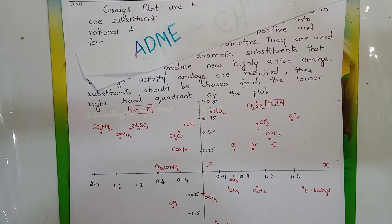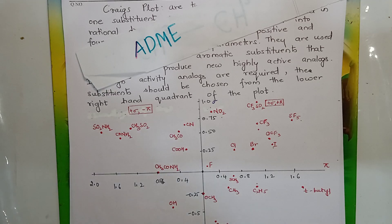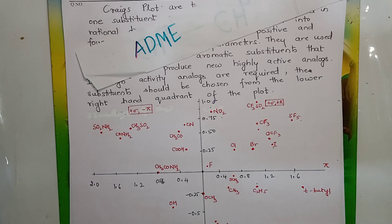One of them was Hans. He proposed that drug action was divided into two stages: pharmacokinetic and pharmacodynamics. Now due to this, most of the problems were solved, but still some disadvantages of Hans' drug action theory remained.